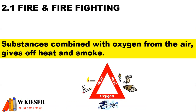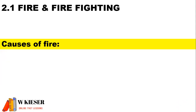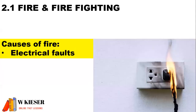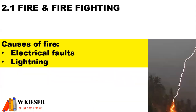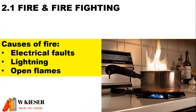A fire is a substance combined with oxygen from the air. It gives off heat and smoke, and it consists of three elements: heat, fuel, and oxygen. Some causes of fire could be electrical faults, lightning, and open flames.